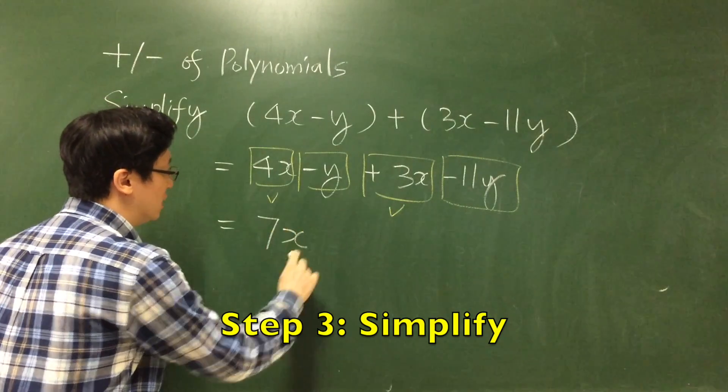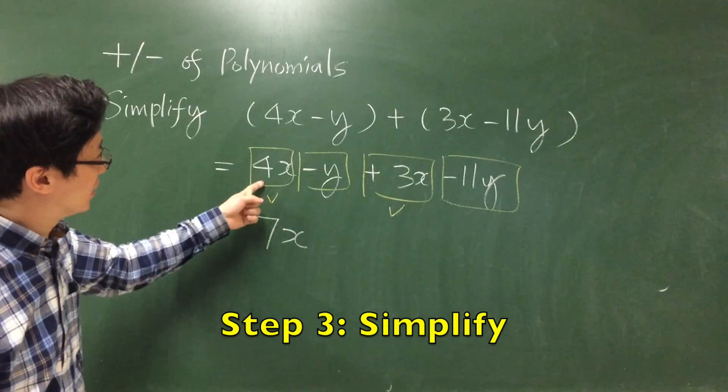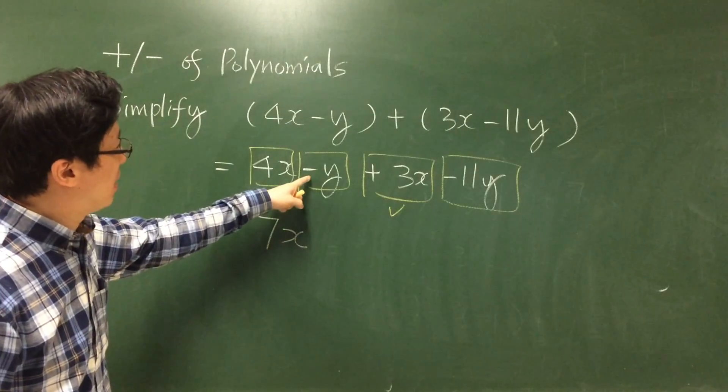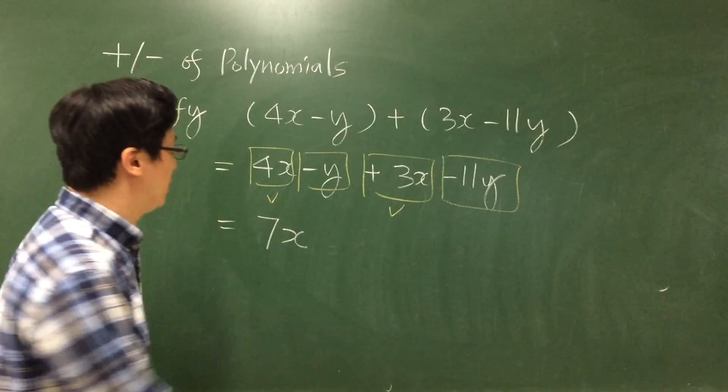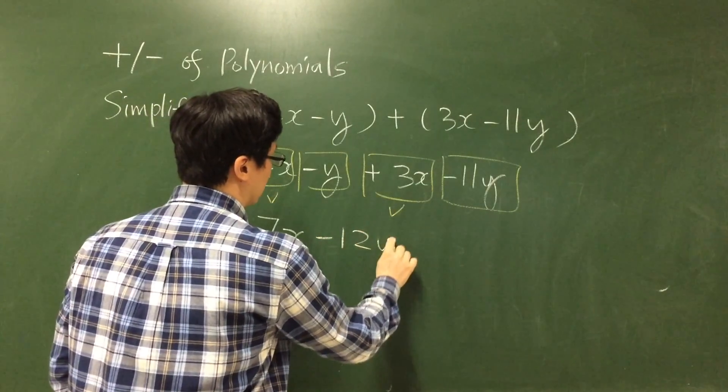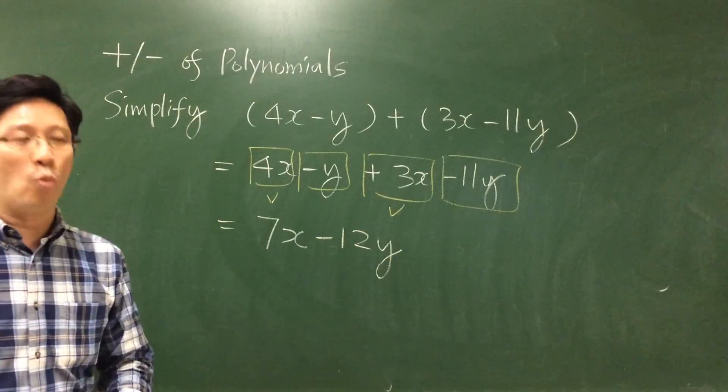If we add them together, we have 7x. They are like terms. Minus y, minus 11y. This is minus 12y.